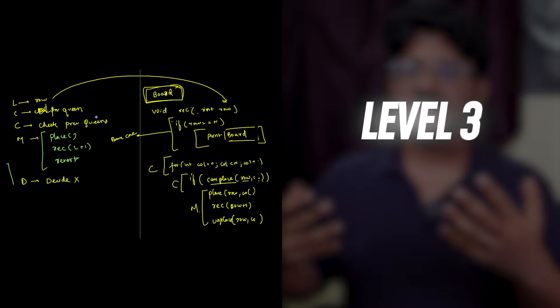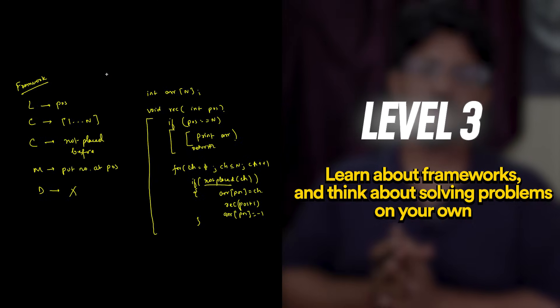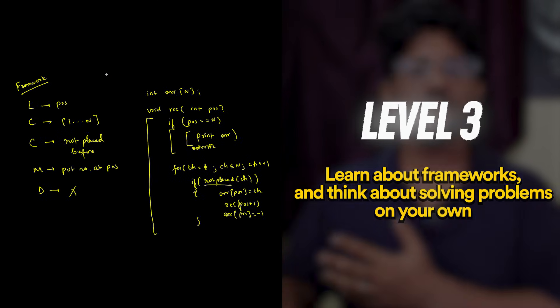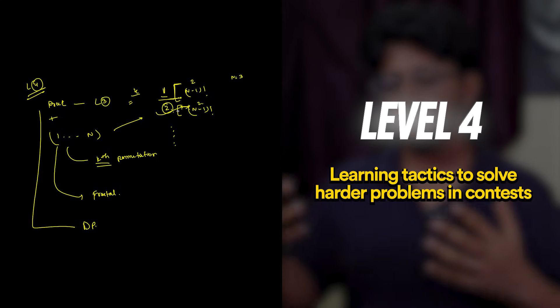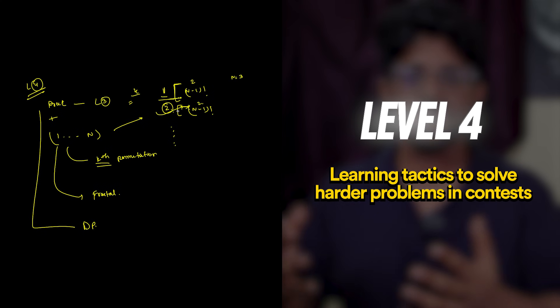When you move to level 3 we discussed that you actually learn about frameworks and you are able to think about problems on your own and you can devise solutions and write codes for them. And level 4 is generally all about collecting tactics that can be used to solve hard problems in contests. This is what makes you competitive. So this is the 4 levels of DSA.